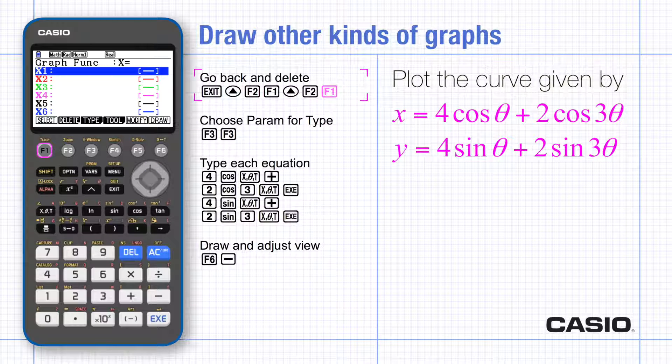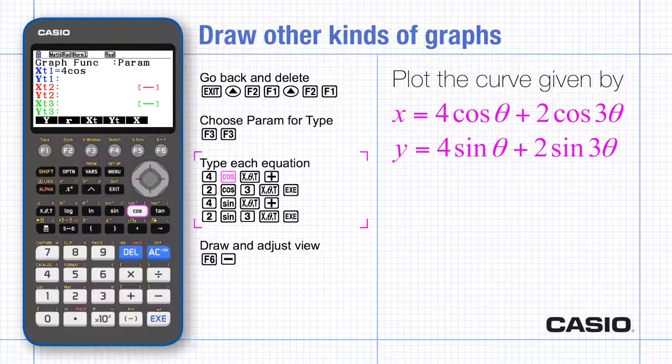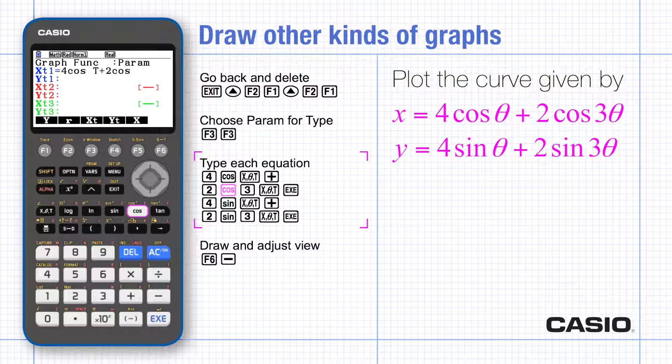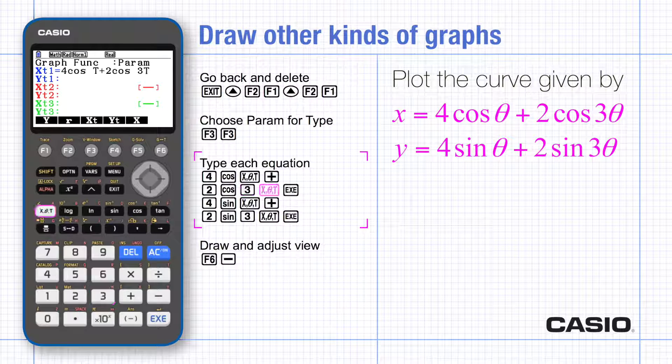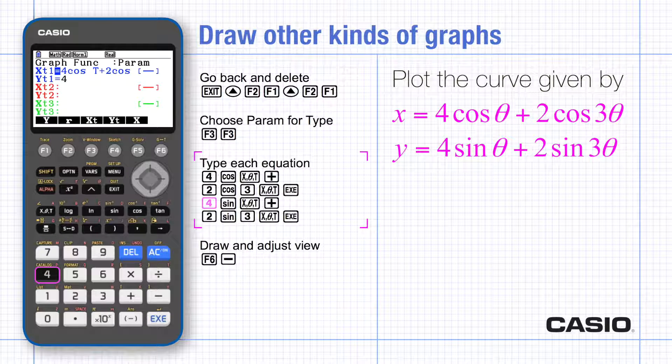And now when you choose type you can choose parametric. And then type each equation, again using the x theta t key, which now gives t for the parameter. Notice the default setting for the angle is in radians and the range that the parameter takes matches that.